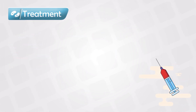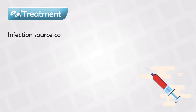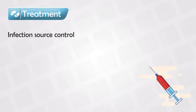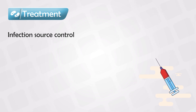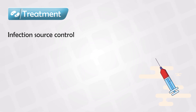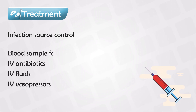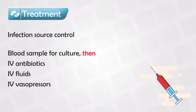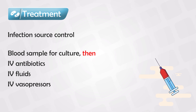To treat sepsis, the most important thing is to eliminate the source of infection. For example, if the patient has gangrene in a toe, it must be amputated. Or if there is a perforated appendix or diverticulitis, it has to be treated before initiating anything else. Then the patient has to be given antibiotics intravenously, along with intravenous fluids and vasopressors to increase the blood pressure.